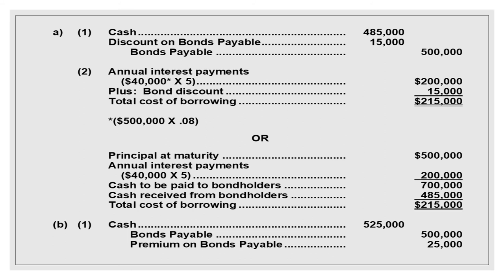Part (b), number one — issuing at premium: Cash debit $525,000; Bonds Payable credit $500,000 (always at face value); Premium on Bonds Payable credit $25,000.